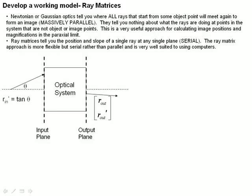So let's take a look at this. We have an optical system that we've defined, and we have an input plane and an output plane for that optical system. We have an input position R_n right there, and we have an input slope defined by the tangent of this angle theta.